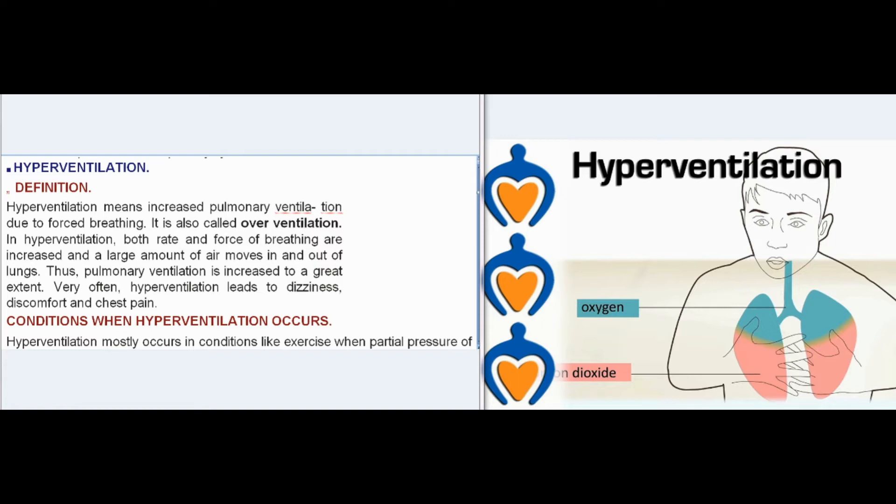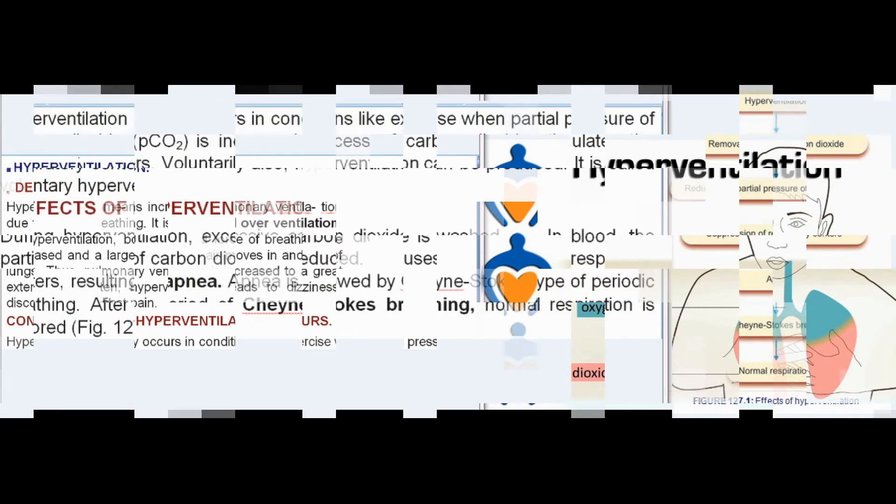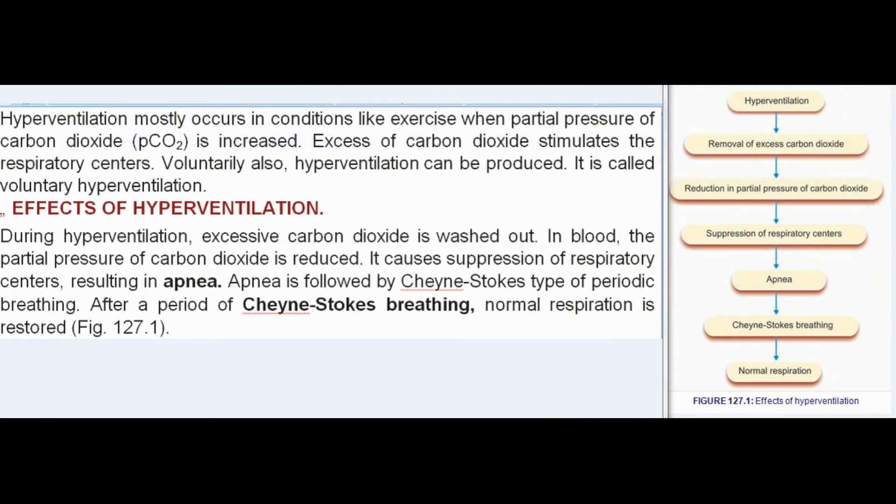Hyperventilation mostly occurs in conditions like exercise when the partial pressure of carbon dioxide (PCO2) is increased, since excess carbon dioxide stimulates the respiratory centers. Voluntarily, hyperventilation can also be produced — called voluntary hyperventilation. During hyperventilation, excessive carbon dioxide is washed out; the partial pressure of carbon dioxide in blood is reduced, causing suppression of respiratory centers, resulting in apnea.